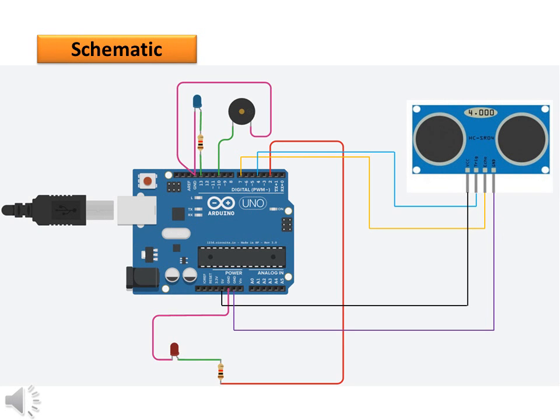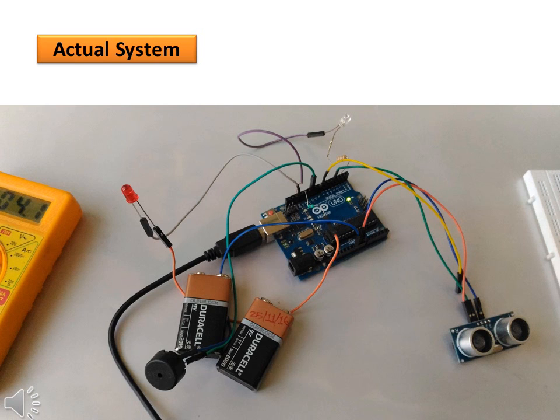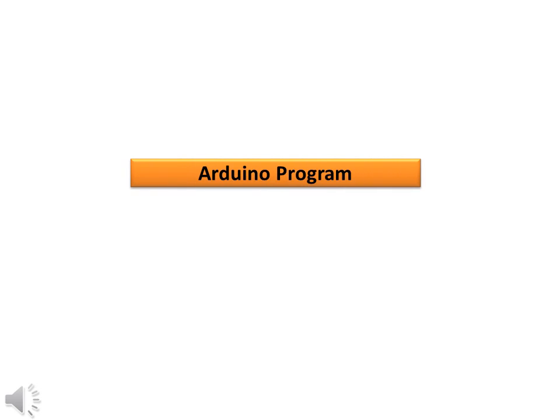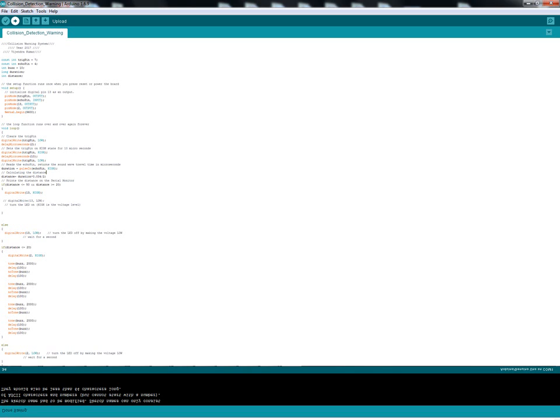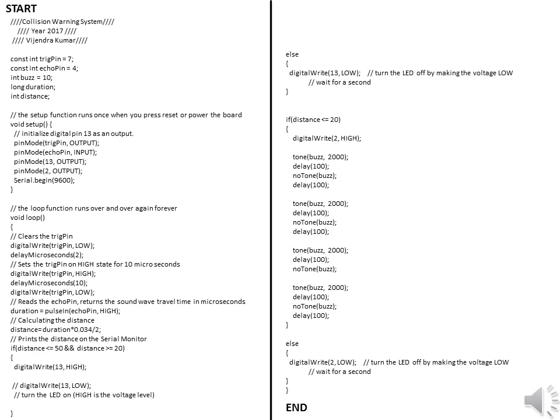Follow the schematic to connect items with the board through jumper wires. This is the actual system made by me. To write the program you need to install the Arduino IDE, which is available free at the Arduino website. You can also copy this program or download it from the link provided.